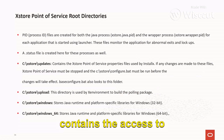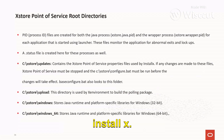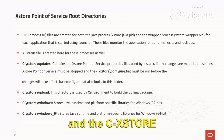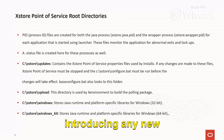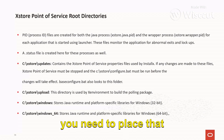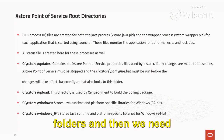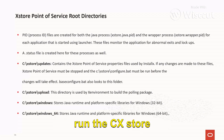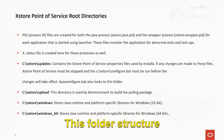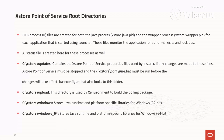C:\AccessStore\updates contains the Access Store point of service properties file used by InstallX. If any changes are made, Access Store point of service must be stopped and the C:\AccessStore\configure.bat file must be run before the changes will take effect. This means if you are introducing any new files or new properties into the Access Store system, you need to place those file changes into these folders, stop Access Store, and then run the C:\AccessStore\configure.bat file — it will update that property to the respective files. This folder structure is also used by the base configure.bat as well.